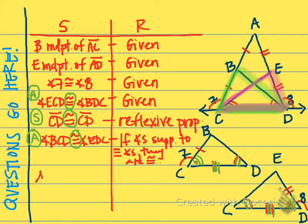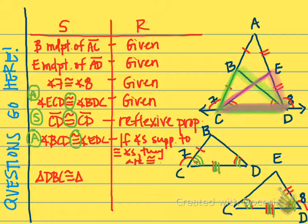It doesn't really matter what we call the first triangle — we could call it DBC. But when we name the second triangle, the letters need to correspond. D corresponds with C, B corresponds with E, and C corresponds with D since these are reflections of each other. So it's going to be triangle CED. And that's by ASA.